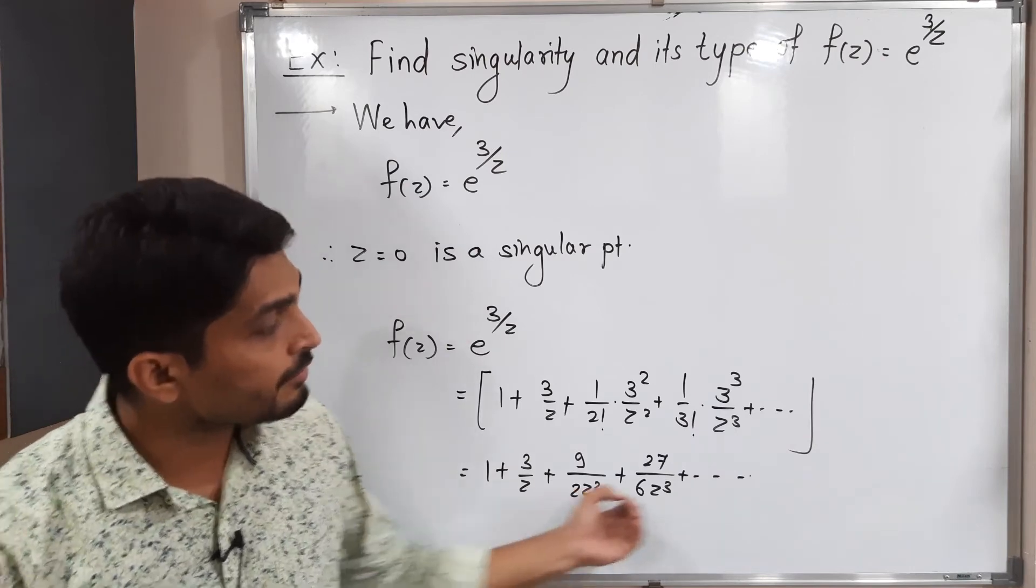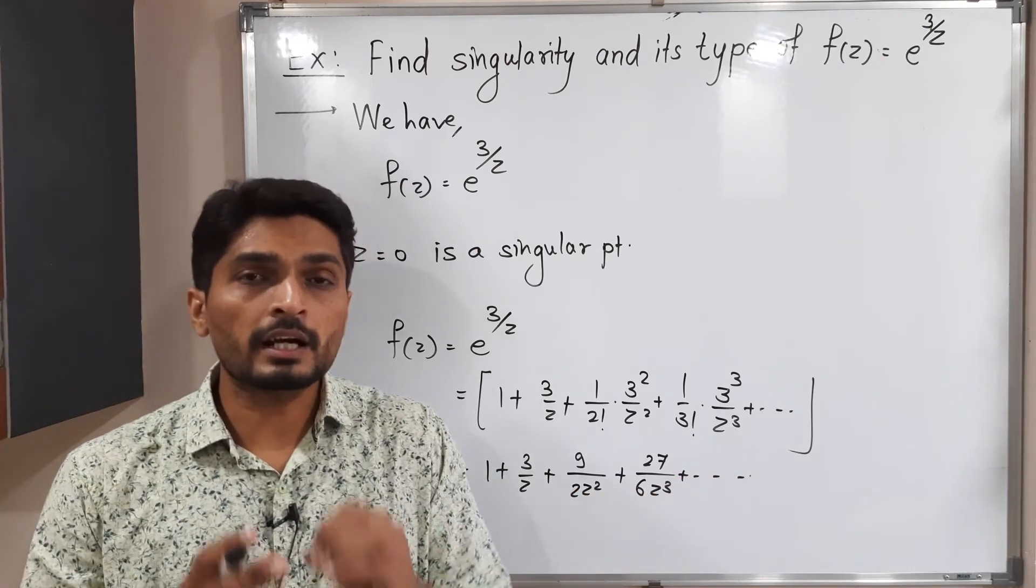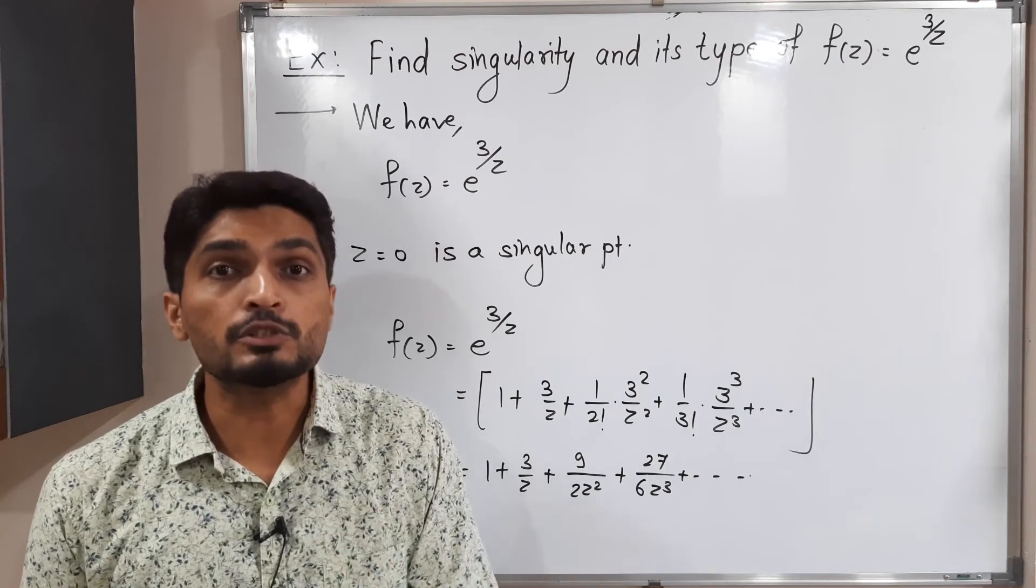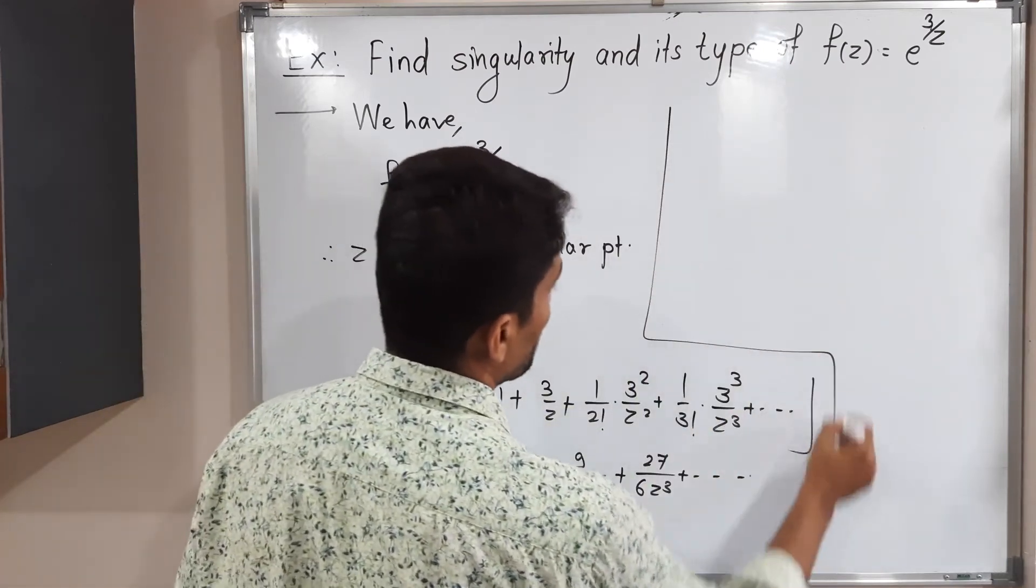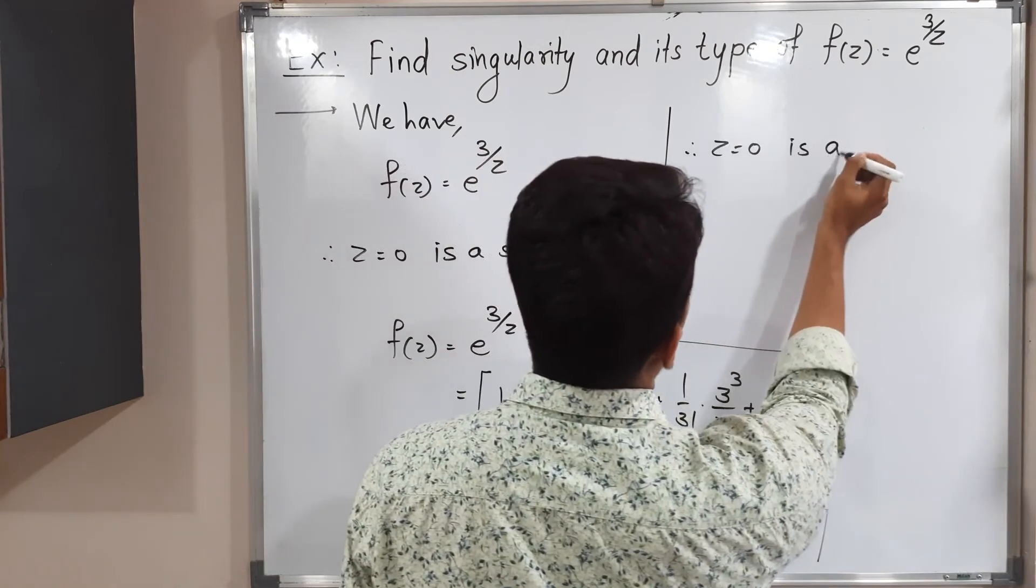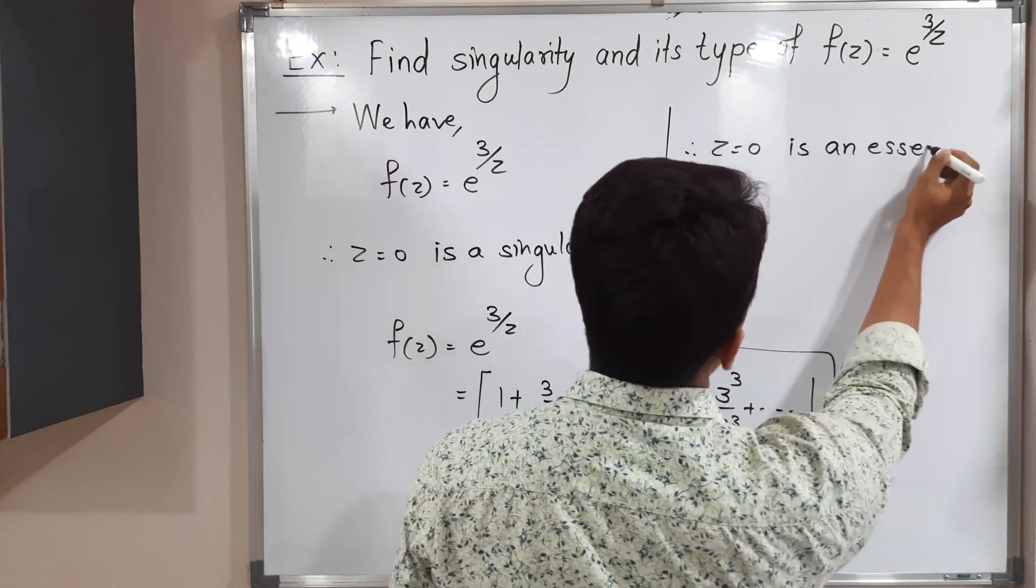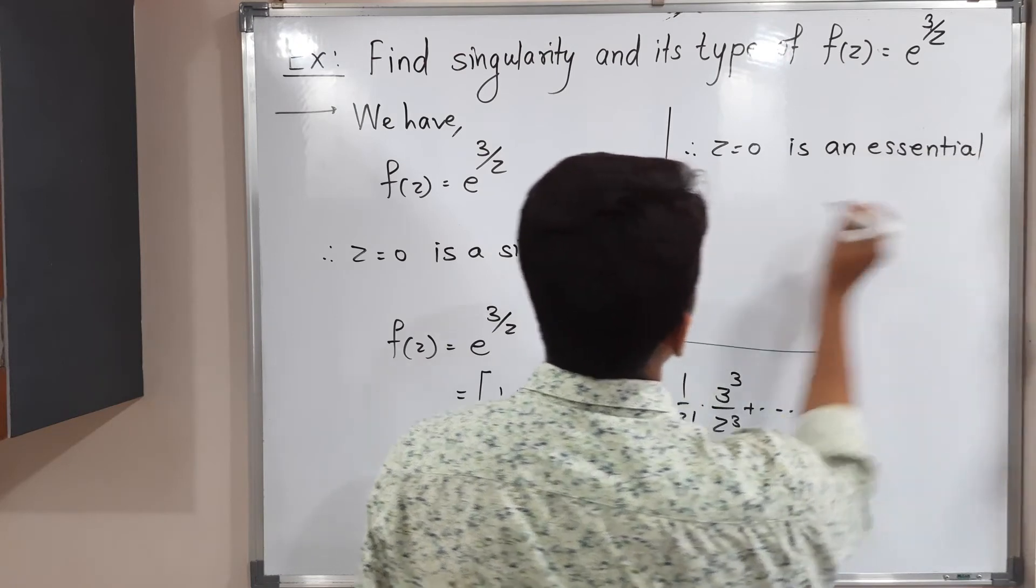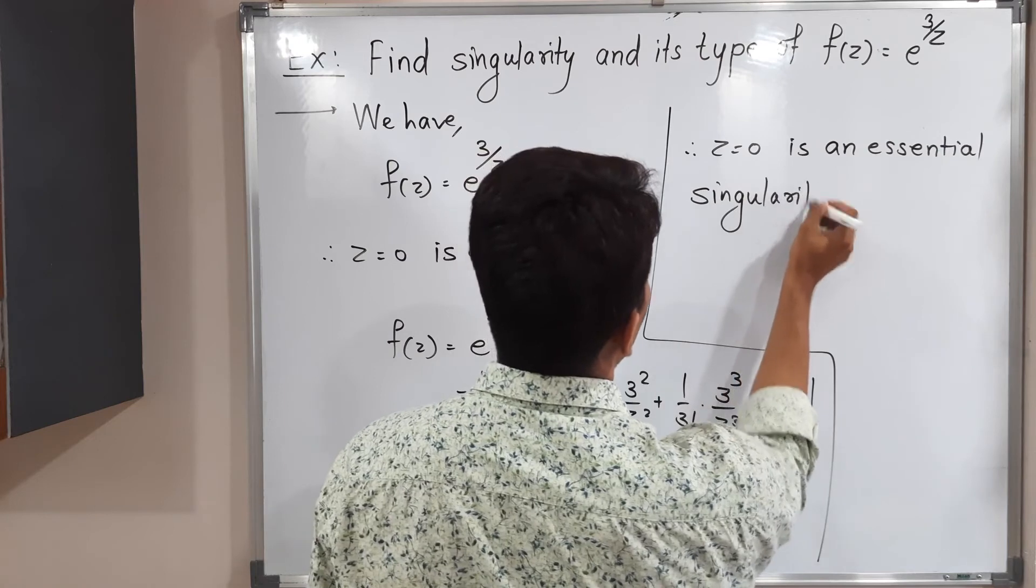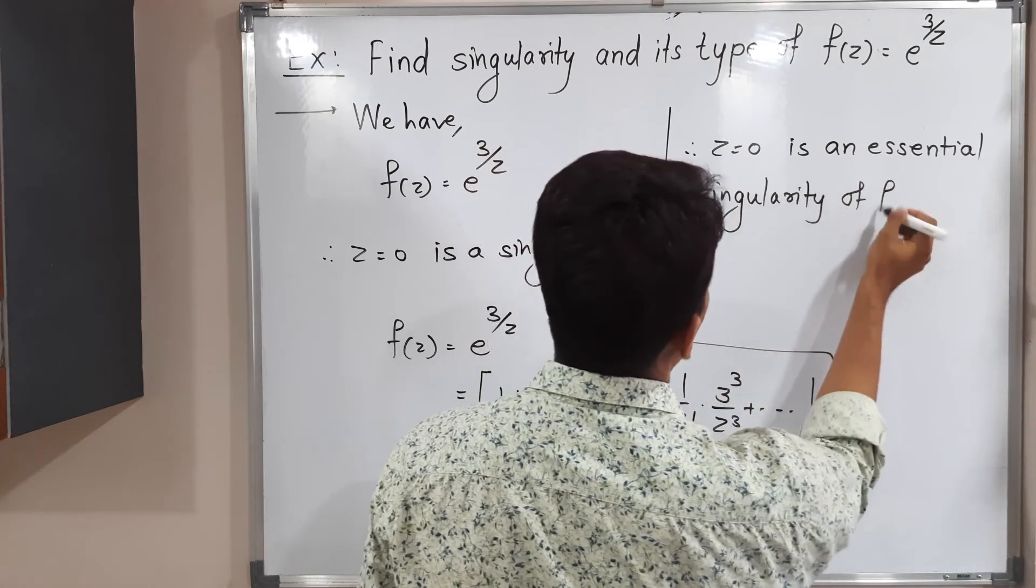It has infinite terms, meaning there are infinitely many non-zero coefficients. This is an essential singularity. Therefore, z = 0 is an essential singularity of f(z).